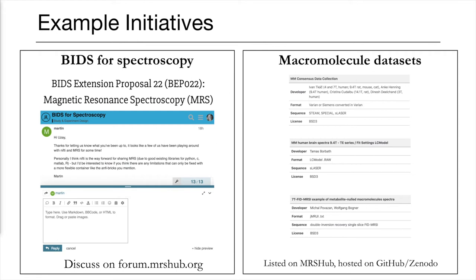We'd like to highlight two examples already on the site. The first is discussion on the forum around the BIDS for Spectroscopy proposal. BIDS is a specification for dataset organization, originally created for functional neuroimaging data. The founding idea is that by organizing datasets in a structured way, data is more easily understood, analyzed, and shared. It's been successfully extended to a diverse range of MRI contrasts and non-MRI modalities. A few years ago, Dixon Wong kicked off the proposal for including MRS data in BIDS, and a number of researchers are now continuing that work by discussing it in the MRS Hub Forum, covering data format, metadata, and how to label MRS data.